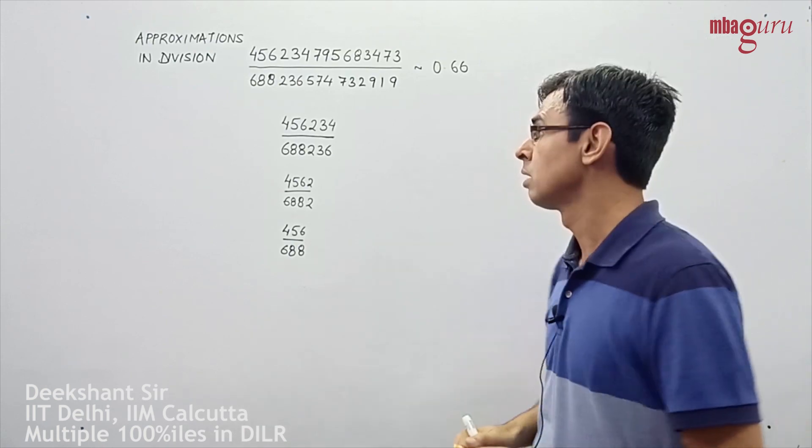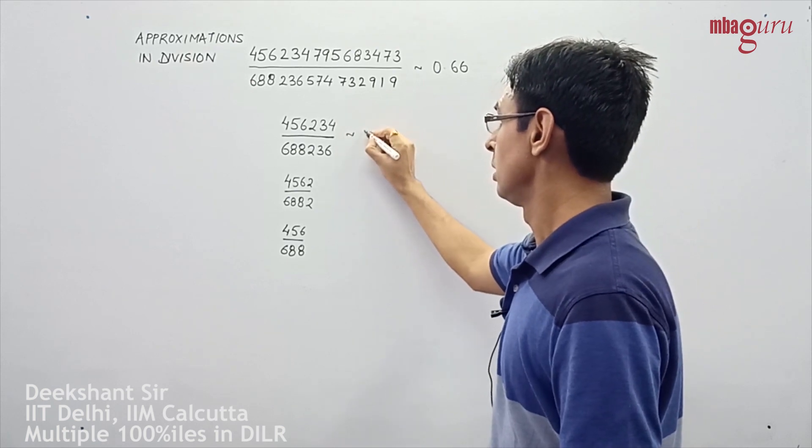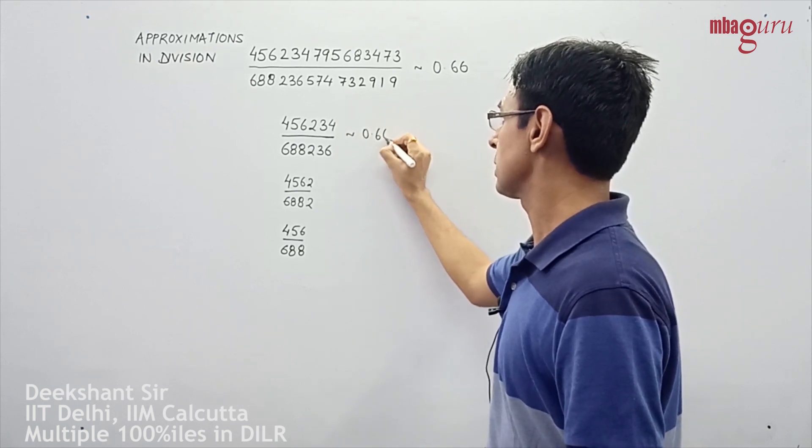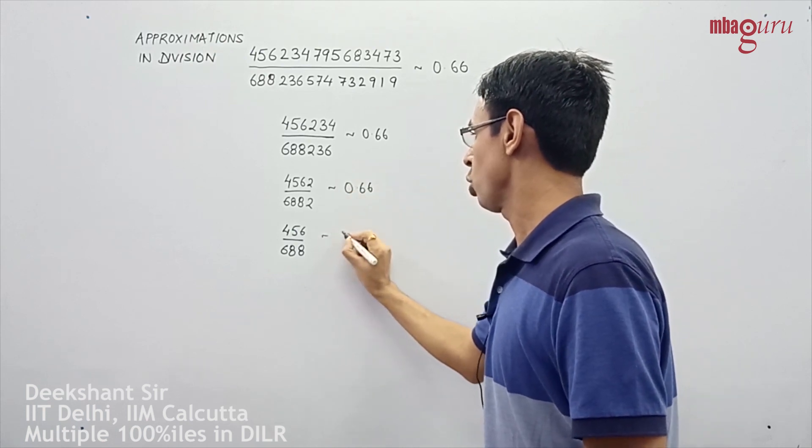Now if you've done that, you will find that this expression is also close to 0.66, so is this one, and so is this one.